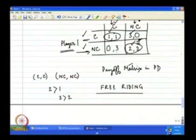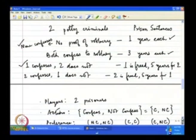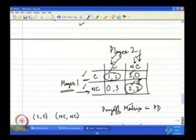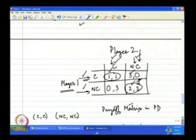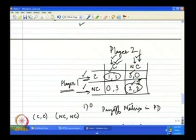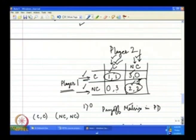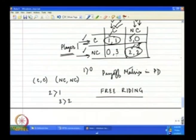Another interesting observation from the payoff matrix: from the point of view of player 2, if player 1 is going to play NC, player 2 should play C (getting 3 over 2). If player 1 is going to play C, then player 2 compares: C gives 1, NC gives 0 — so again C is better. It does not matter what the other player is doing — it is always better for each player to play C. So C is a dominant strategy for both players.